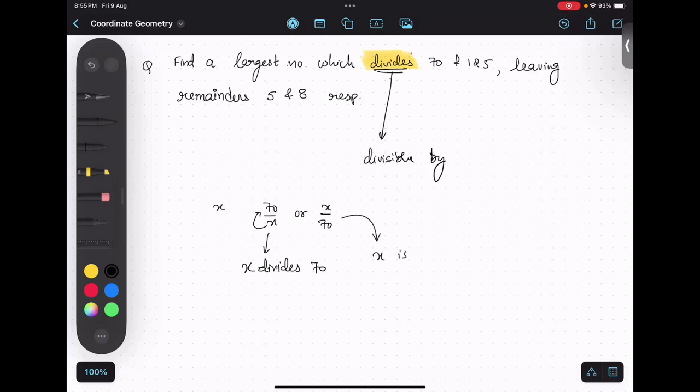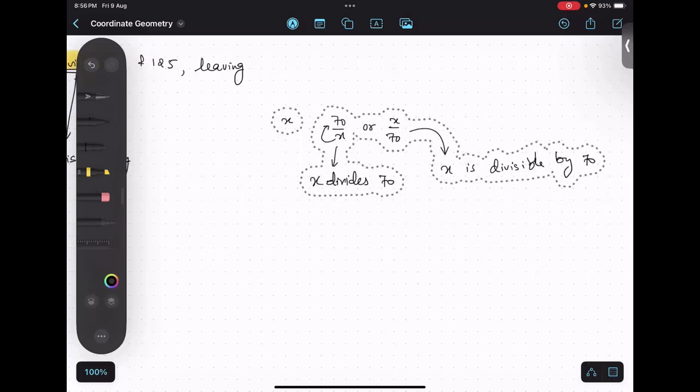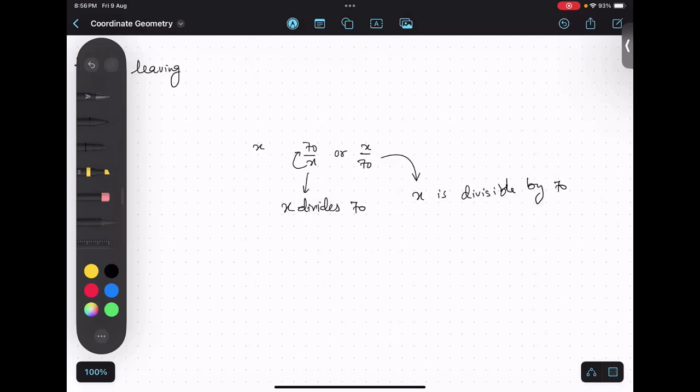And over here, x is divisible by 70. Please try to understand this. I am going to erase this - you can copy it for yourself. This information is very important.